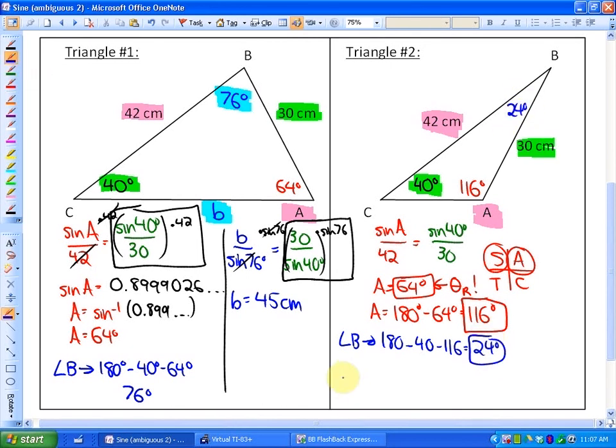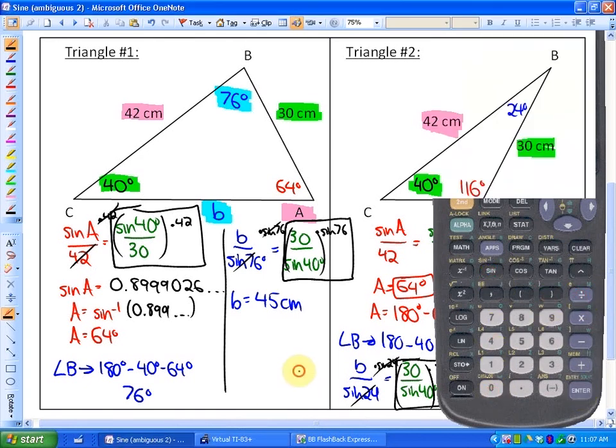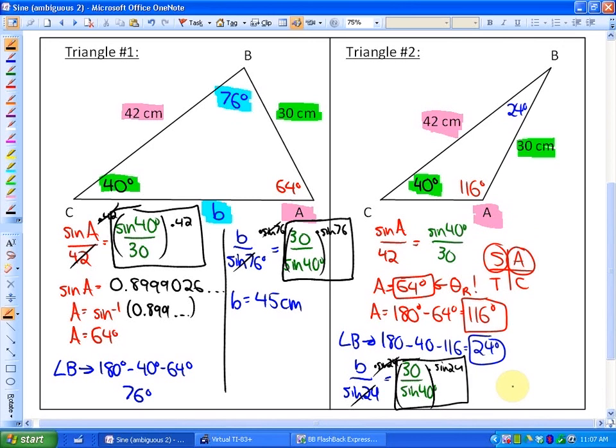And finally, to solve for side B, what I would do is do B over sine 24 is equivalent to 30 over sine 40. So using the sine law to do that. So multiply both sides by sine 24, and B is equivalent to this boxed part here, so I'll do it in multiple steps, 30 divided by sine 40, equals and times by sine 24, and I get an estimated length of 19, so that's roughly 19. B is 19 centimeters, and I've solved both triangles.